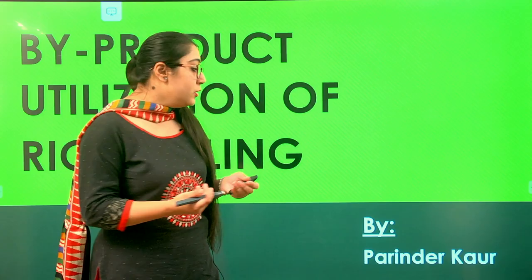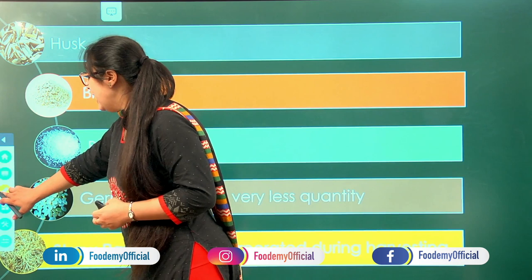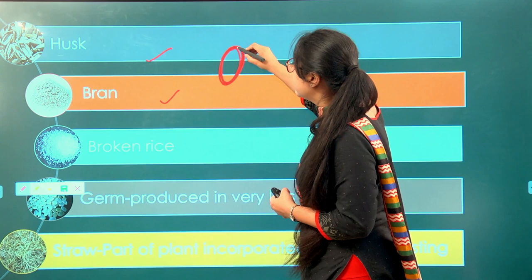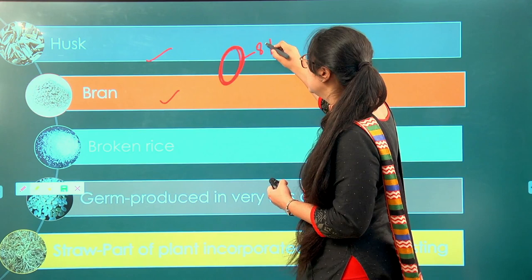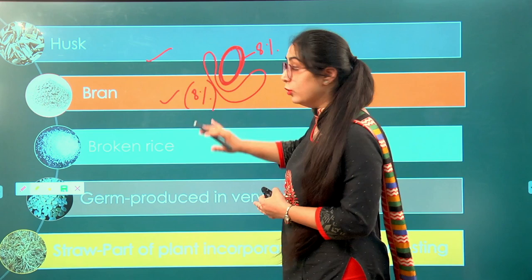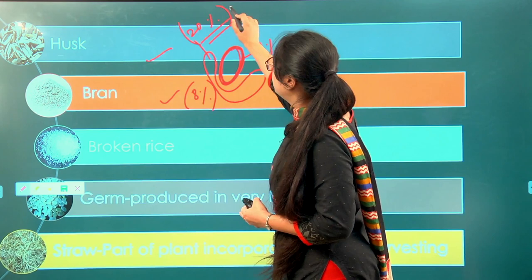First, let us look at what products are produced during rice milling. There are five main products: husk and bran. The outermost layer — bran — is removed from brown rice to produce white rice, comprising around 8% of the total rice weight. The outer covering husk is also removed, which is around 20% of the total rice weight. Broken rice is also produced during milling.